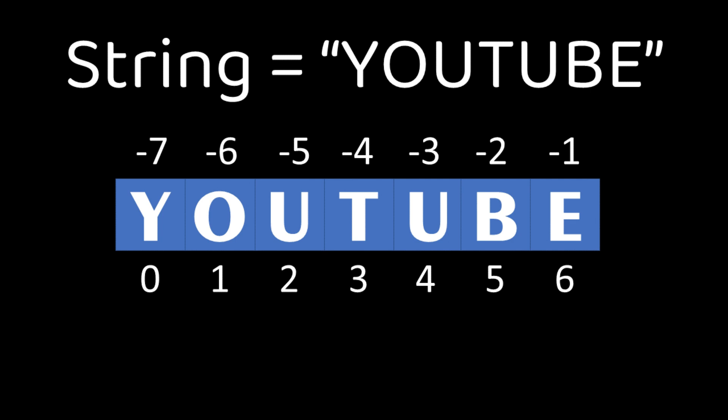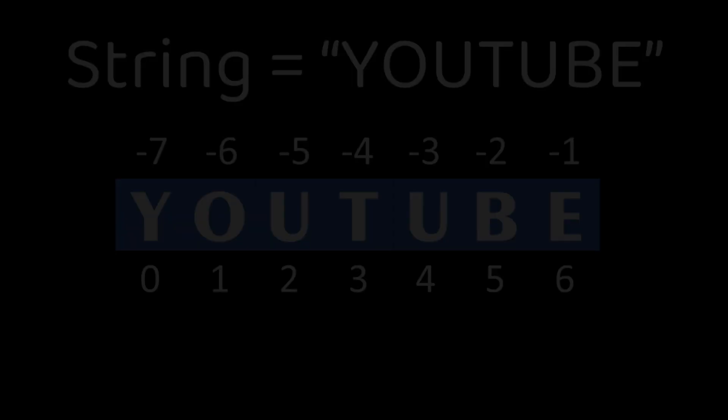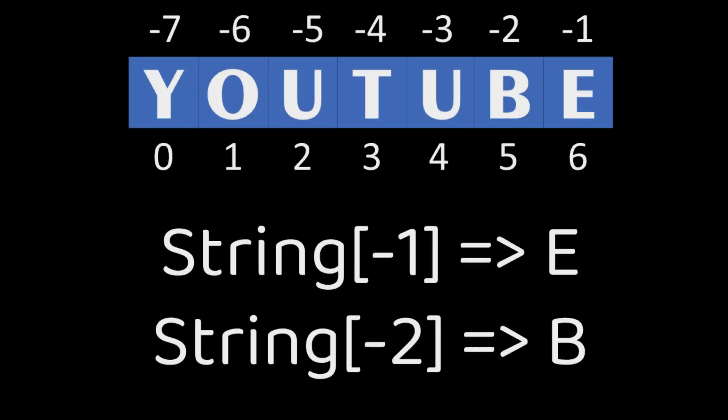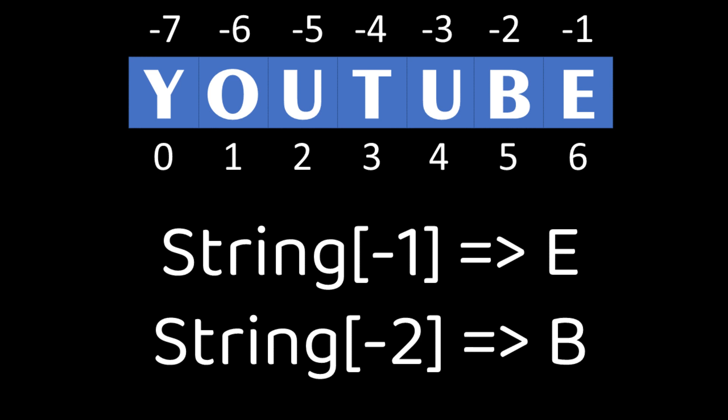This is how the string looks like when we are done with indexing. If we access string of 0, it gives y. If we access string of 1, it gives us o. Similarly, for negative index, string of minus 1 gives e and string of minus 2 gives b and so on.